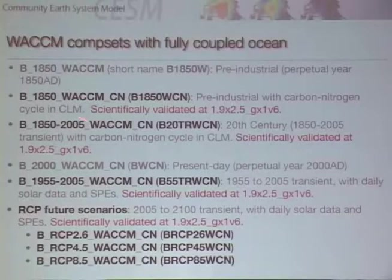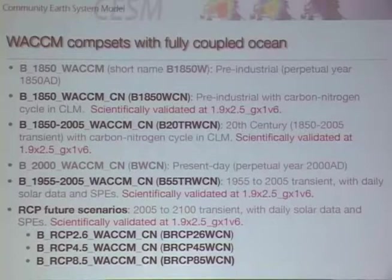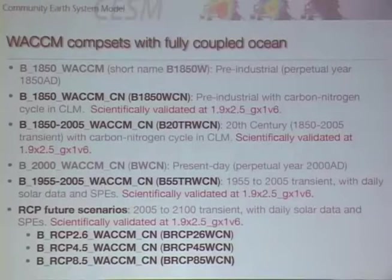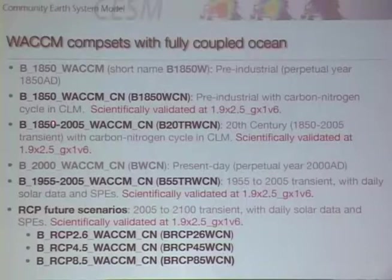Here's a list of the B comp set — the one with interactive ocean. You have a pre-industrial case at 1850, which is a perpetual 1850 run. This is the case you'd run to ensure your model is in balance, because if you're running present day, the atmosphere is out of balance and will drift. But pre-industrial, when CO2 wasn't drifting, you'd hope the model is in balance and the mean surface temperature isn't drifting too much.